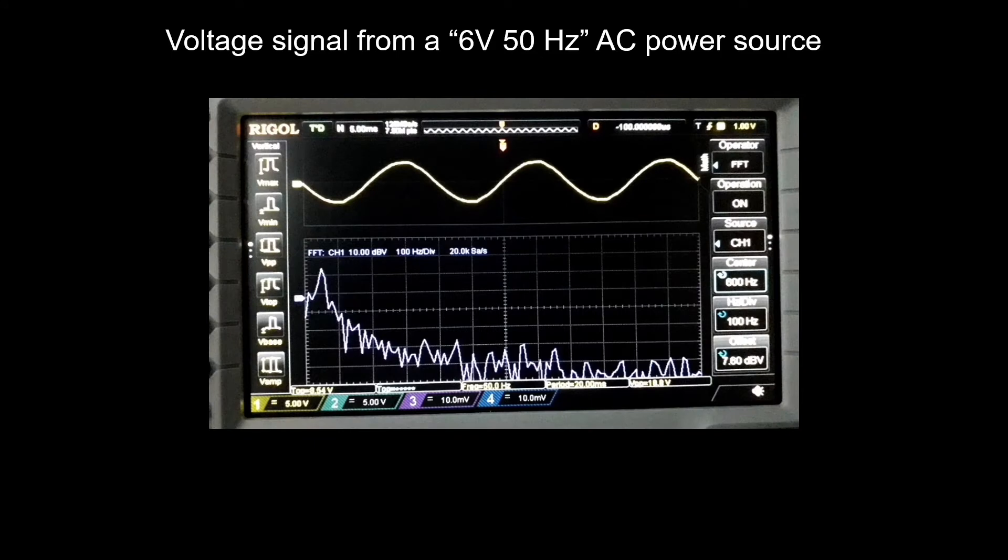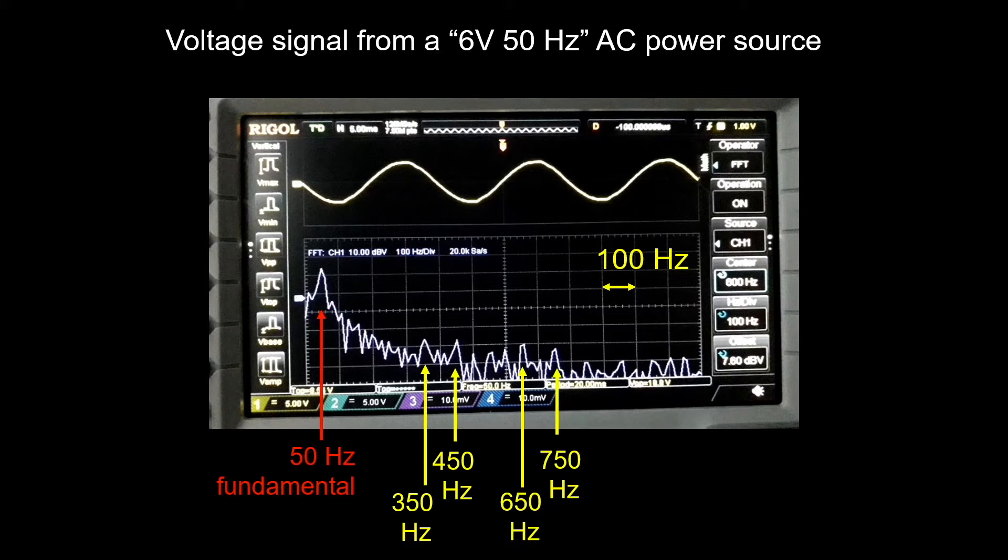After the Fourier transform we can see the frequencies inside the signal. The main peak at 50 Hertz corresponds to the fundamental frequency, but we can also see peaks at 350, 450, 650, and 750 Hertz. These correspond to the 7th, 9th, 13th, and 15th harmonics, so our power source already has some harmonics inside.